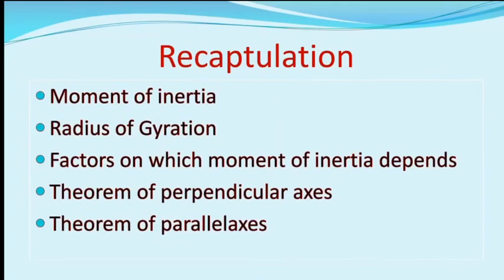Recapitulation: The moment of inertia is the quantity which plays the same role in rotational motion as mass does in linear motion. Moment of inertia of a body is defined as the sum of the products of the masses of the constituent particles and the square of their perpendicular distances from the axis of rotation. Radius of gyration is defined as the perpendicular distance from the axis of rotation at which, if the whole mass of the body is supposed to be concentrated, its moment of inertia would be the same as the moment of inertia of the body about that axis.